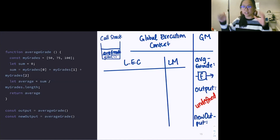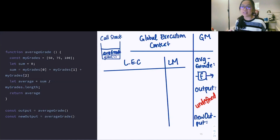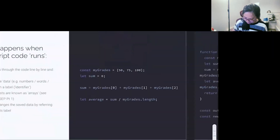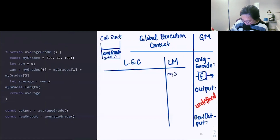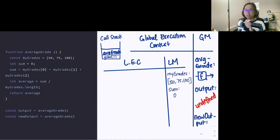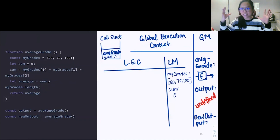One thing to note: our global memory will not have access to this local memory — they are different execution contexts. As mentioned, there are some things declared in our function inside of our local execution context. In local memory, we have myGrades again with the array of 50, 75, and 100, and sum, which we know is zero. JavaScript is scanning through it, adding whatever it needs to local memory, and executing that way.